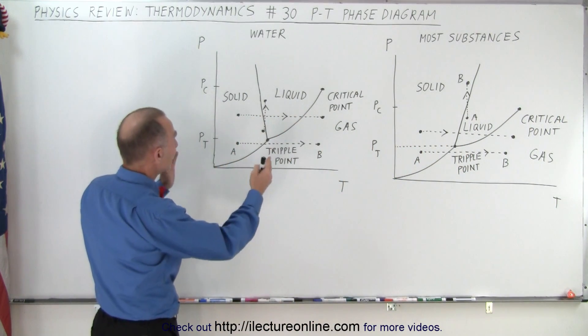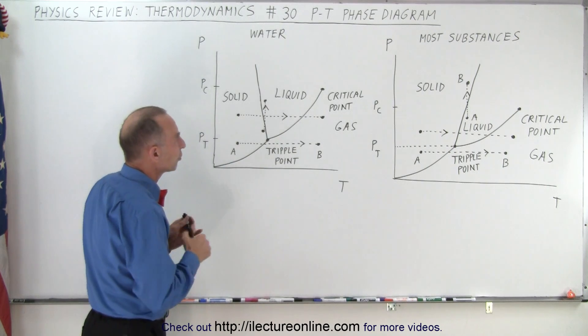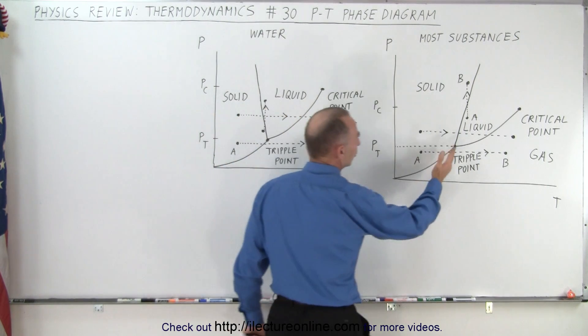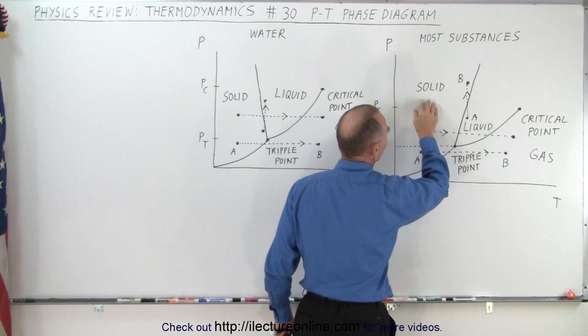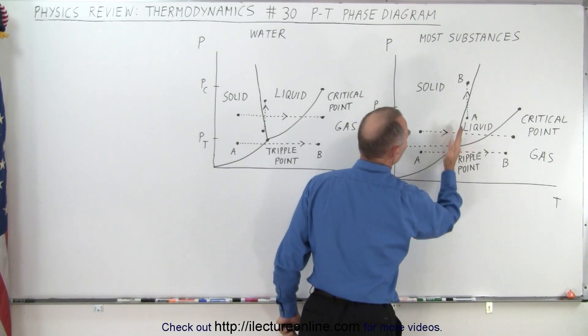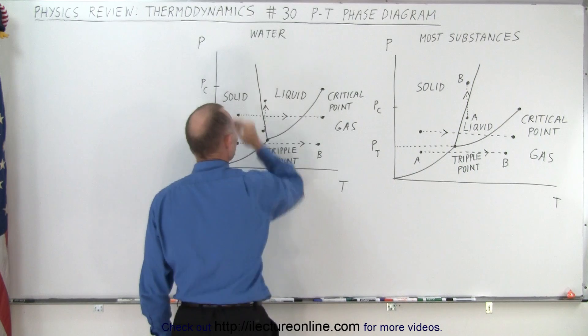If we have the same diagram, but now for water, notice there's one big difference. The line that goes from the triple point on up, that divides the solid from the liquid state, instead of being slanted to the right, it is slanted to the left.